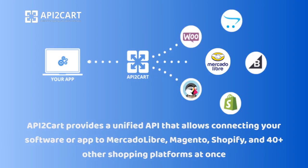The easiest way to develop MercadoLibre API integration and work with its data is to use API2Cart. API2Cart provides a unified API that allows connecting your software or app to MercadoLibre, Magento, Shopify, and 40-plus other shopping platforms at once.